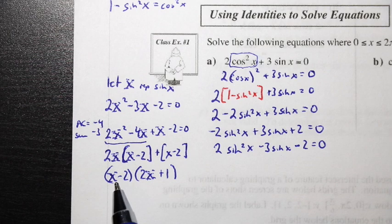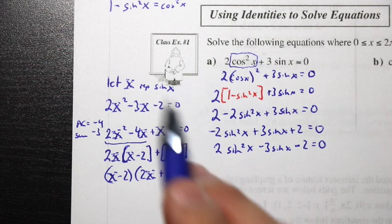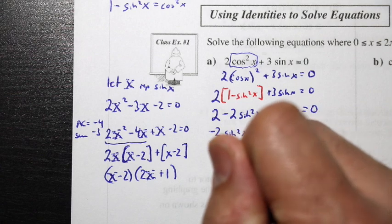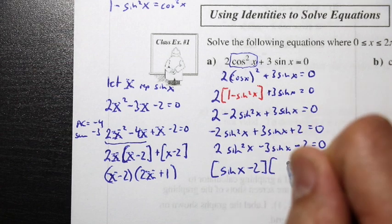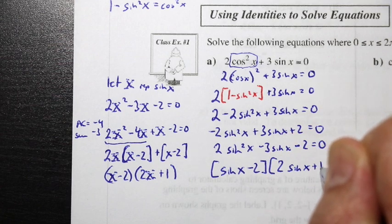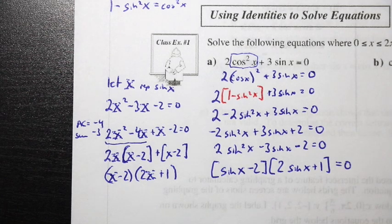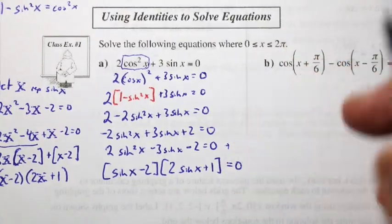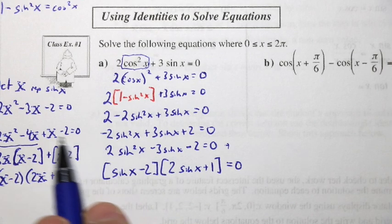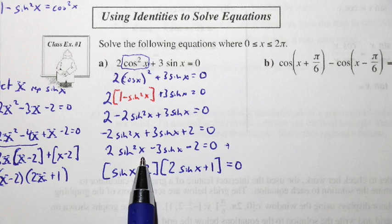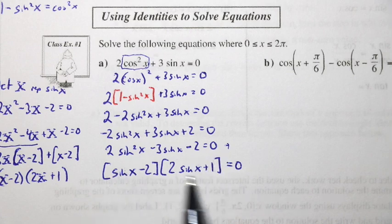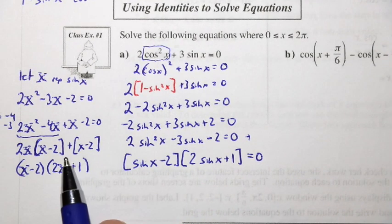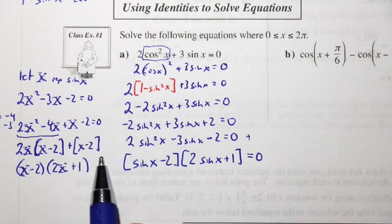Replacing x with sin x: (sin x - 2)(2sin x + 1) = 0. We also could have factored directly from 2sin²x - 4sin x + sin x - 2 = 0, but using the substitution makes it easier to think of it as a quadratic.